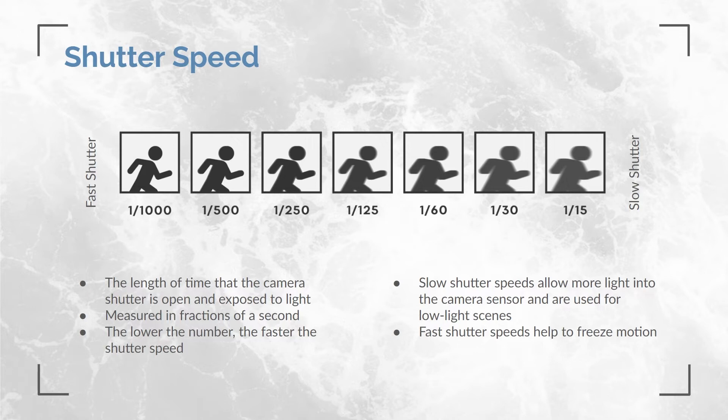Shutter speed determines the duration of the exposure and thereby how much light is sampled. A faster shutter speed, like 1/500 or 2 milliseconds, has the effect of freezing motion, while a slower shutter speed, like 1/30 or 33 milliseconds, may have some motion blur. If the target is moving, faster shutter speeds are necessary. Faster shutter speeds also require more light.